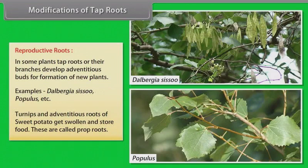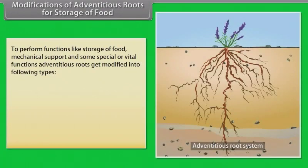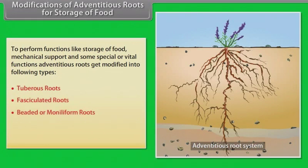Turnips and adventitious roots of sweet potato get swollen and store food. Modifications of adventitious roots for storage of food include: tuberous roots, fasciculated roots, beaded or moniliform roots, nodulated roots, and annulated roots.